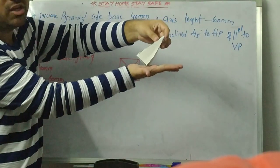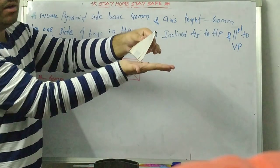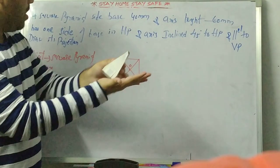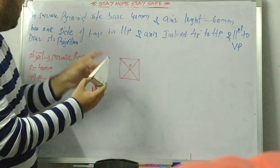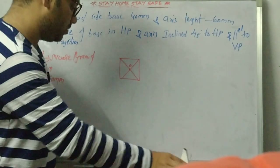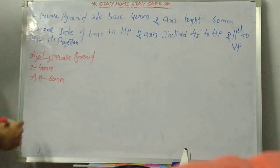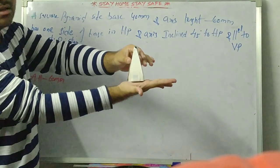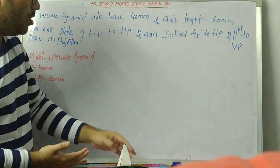The axis will be 45 degrees to the HP. At the same time, one more condition is given: the base is resting on the HP, or the base edge is in the HP. You must satisfy both conditions while drawing the diagram, otherwise the problem will be wrong. Following the previous video's method for when a base edge is given, we draw the top view first because the true shape of the base is seen in the top view.